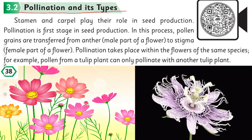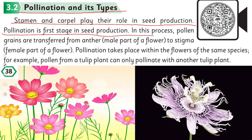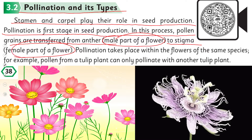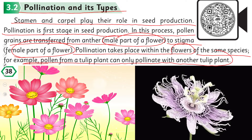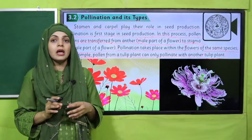Pollination and its types: the stamen and carpel play their role in seed production. Pollination is the first stage in seed production. In this process, pollen grains are transferred from the anther, which is the male part of the flower, to the stigma, the female part of the flower. Pollination takes place within flowers of the same species — for example, pollen from a tulip plant can only pollinate another tulip plant.